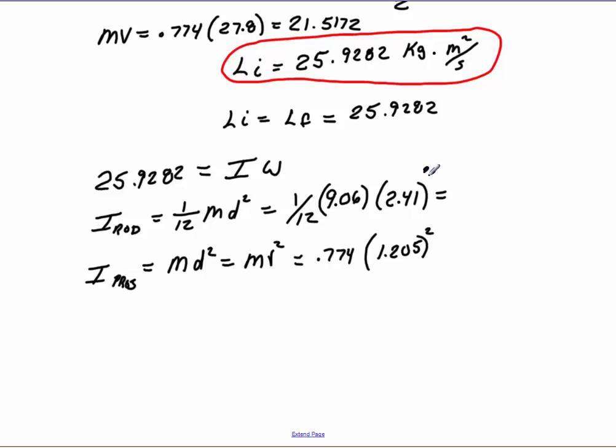Make sure here, I forgot to square that. We need to add those two values together. So we'll run and calculate the first one. So I got 1 divided by 12, times 9.06, times 2.41 squared. This upper one gives me a value of 4.385 kilograms times meters squared. The second one, 0.774 times 1.205 squared gives me a value of 1.1239 kilograms times meters squared. I'm going to add those two values together. That gives me a total moment of inertia of 5.5090 kilograms times meters squared.